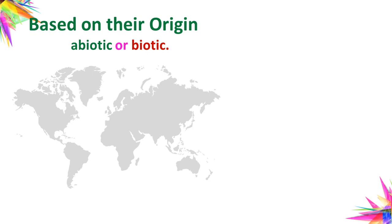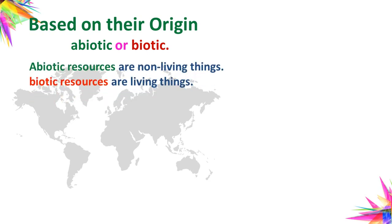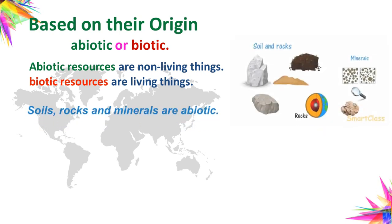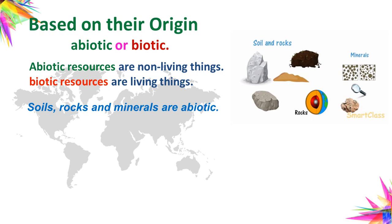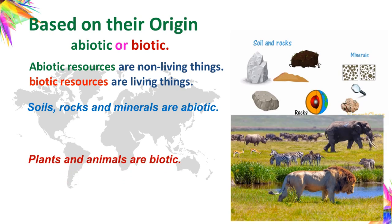On the basis of origin, resources are classified into biotic and abiotic. Abiotic resources are non-living things — they do not have life. Examples are soils and rocks. Biotic resources are living things; they have life. Examples are plants and animals.